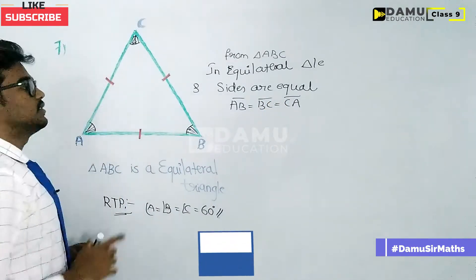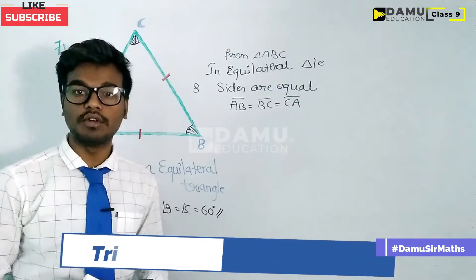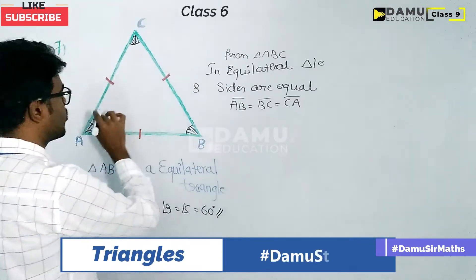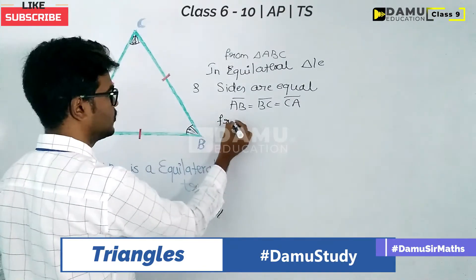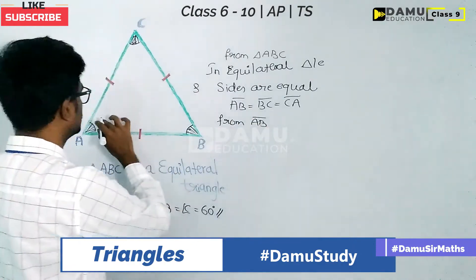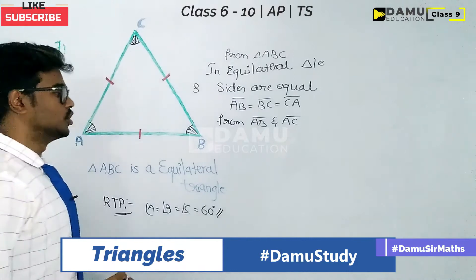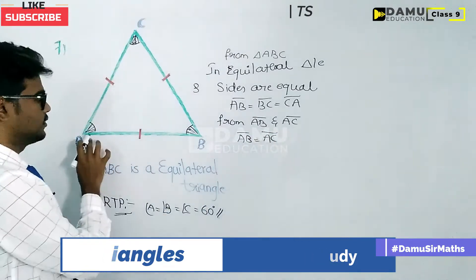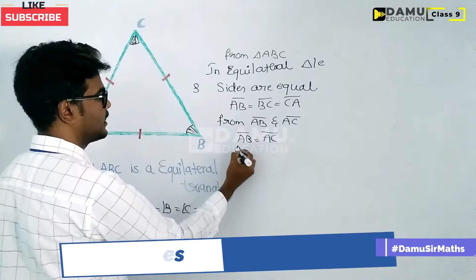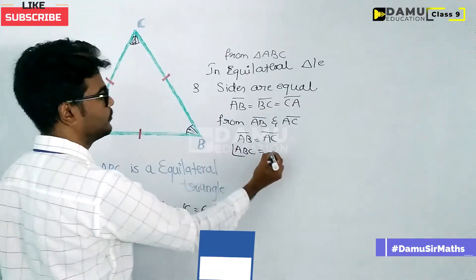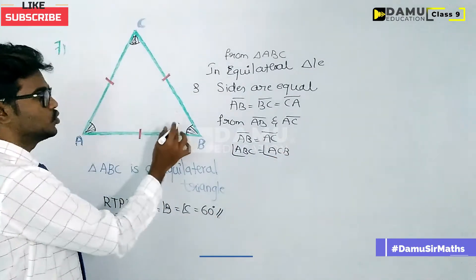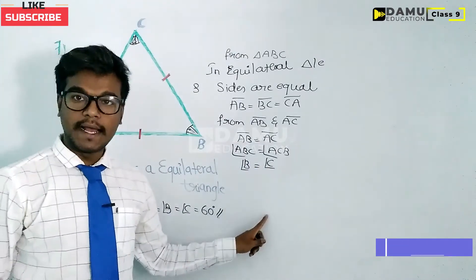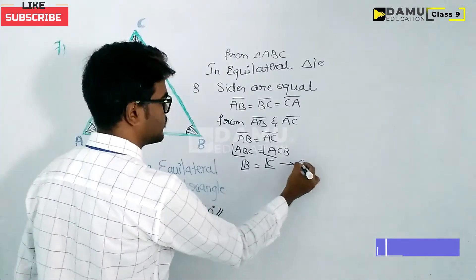If AB and AC are equal, then the opposite angles for these two sides are also equal. From sides AB and AC, the opposite angles are angle ABC and angle ACB. So angle ABC will be equal to angle ACB. These two angles are equal, that is nothing but angle B will be equal to angle C. Let us call this equation 1.